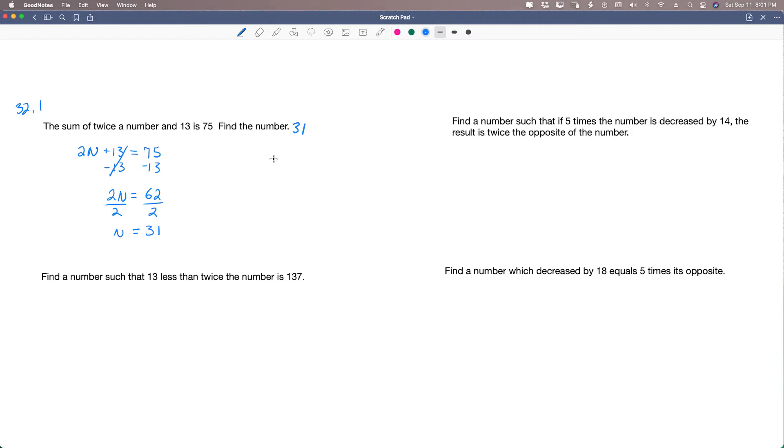Let's look at 32.2. It says to find a number such that 13 less than twice the number is 137. So find a number such that 13 less than twice the number. So all this can go away, and all we need to worry about is this right here.